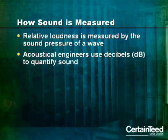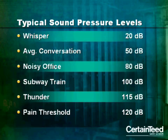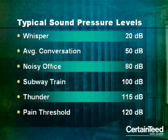How is sound measured? When we measure sound, we're measuring the sound pressure of a wave, which is the relative loudness of that sound wave. Acoustical engineers use decibels to quantify sound. Here's a table of typical sound pressure levels in decibels, ranging from a whisper, which is about 20 decibels, to the threshold for pain, which is about 120 decibels. Most activities among people — conversations in offices and homes — are in the 50 to 80 decibel range. Once you get over 80 decibels, it gets difficult to communicate effectively.